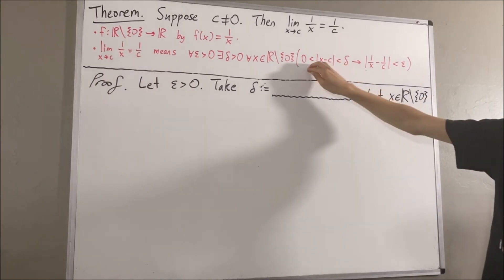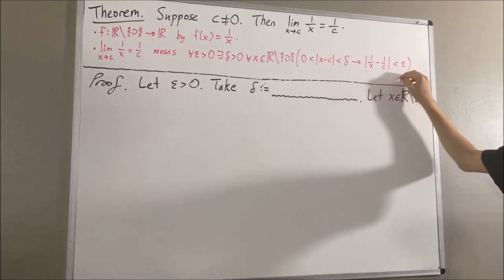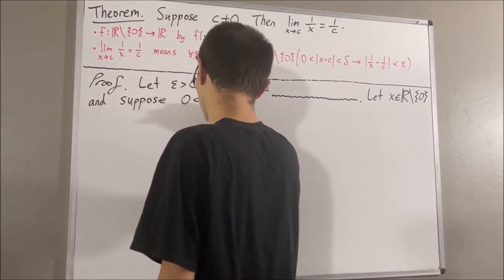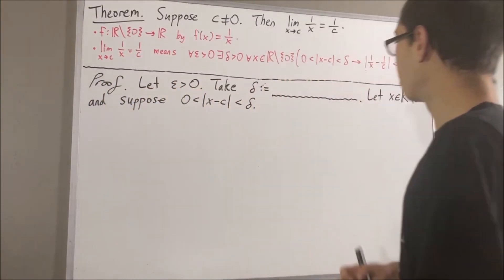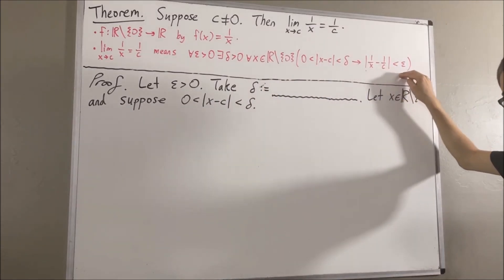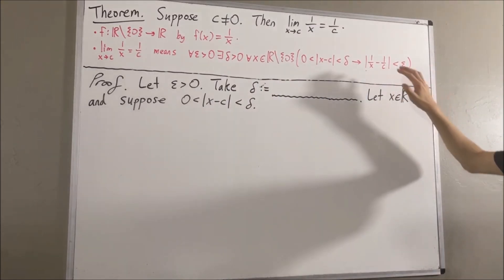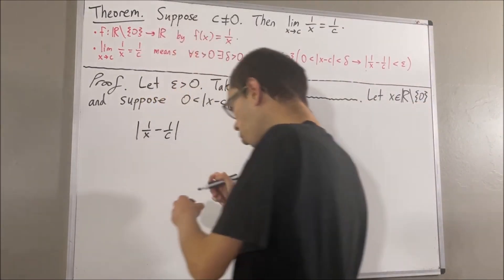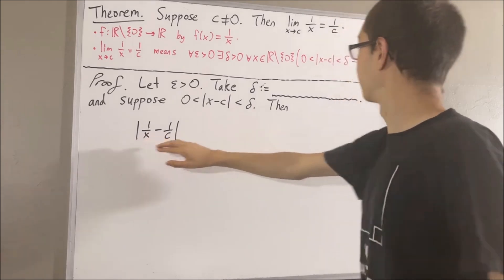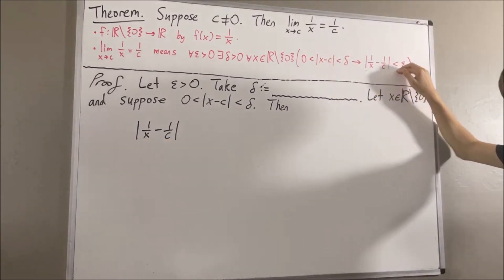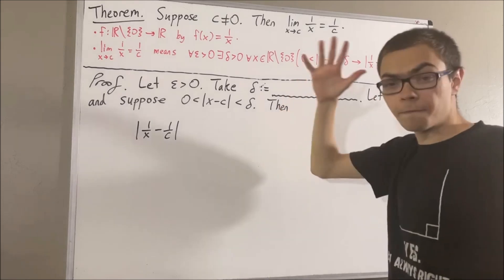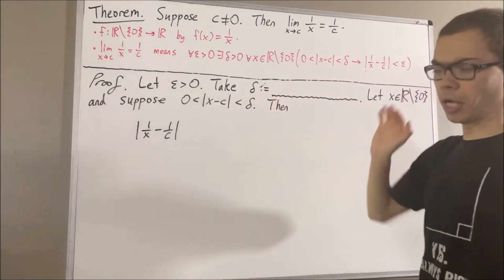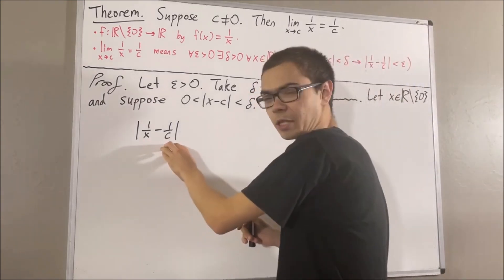From here, we want to show: if this is true, then this is true. So, let's suppose that this is true. From here, we want to show that this is true. So, let me start out by writing the left-hand side of this inequality. The whole goal is to make this guy less than epsilon. And in the process of doing so, we're going to figure out what we should choose delta to be.